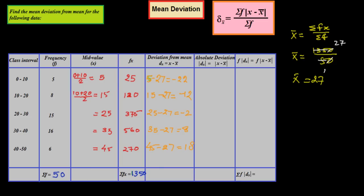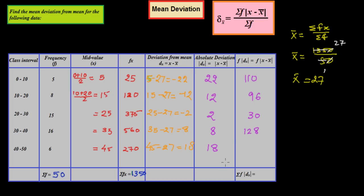We now take the absolute values of the deviations: 22, 12, 2, 8, and 18. Then we multiply each absolute deviation by its corresponding frequency: 5×22=110, 8×12=96, 15×2=30, 16×8=128, and 6×18=108.